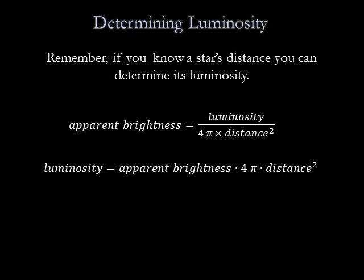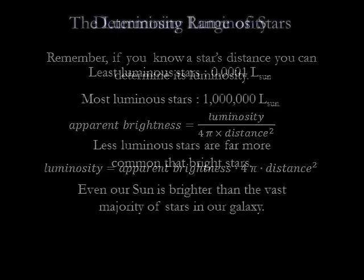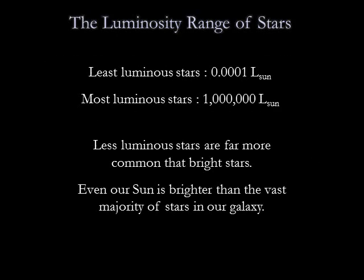If you know a star's distance, you can determine its luminosity. For a star that you've measured the parallax angle for, you can calculate the distance, and then use a detector to measure the apparent brightness — you have everything you need to determine luminosity, or the intrinsic brightness, of the star. We usually state stellar luminosities in comparison to the Sun's luminosity. Stars have a wide range of luminosities: the dimmest stars are one ten-thousandth times that of the Sun, while the brightest stars are about a million times as luminous as the Sun. Less luminous stars are far more common than bright stars, and even our Sun is brighter than the vast majority of stars in our galaxy.